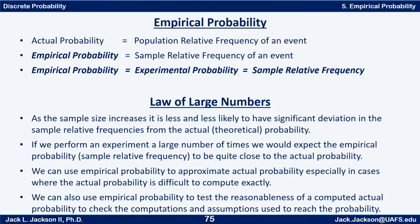We have something called the law of large numbers, and it says that as the sample size increases, it is less and less likely to have significant deviation in the sample relative frequencies from the actual theoretical probability or population relative frequencies. So if we perform an experiment a large number of times, we would expect the empirical probability — the sample relative frequency — to be quite close to the actual probability.